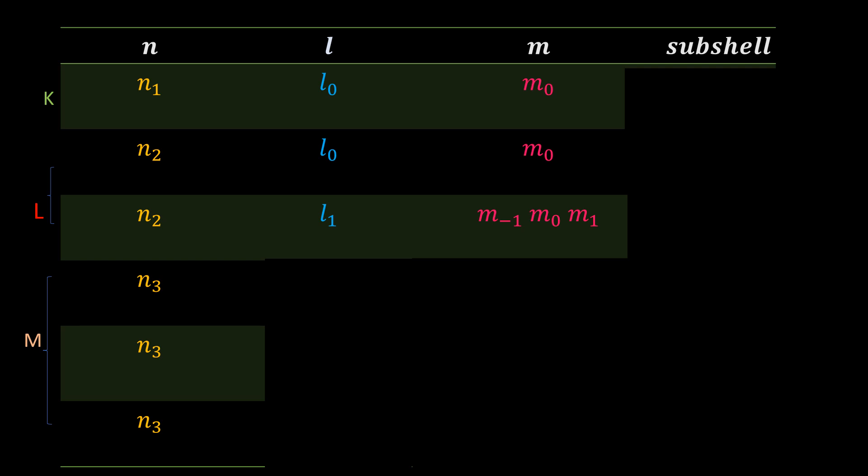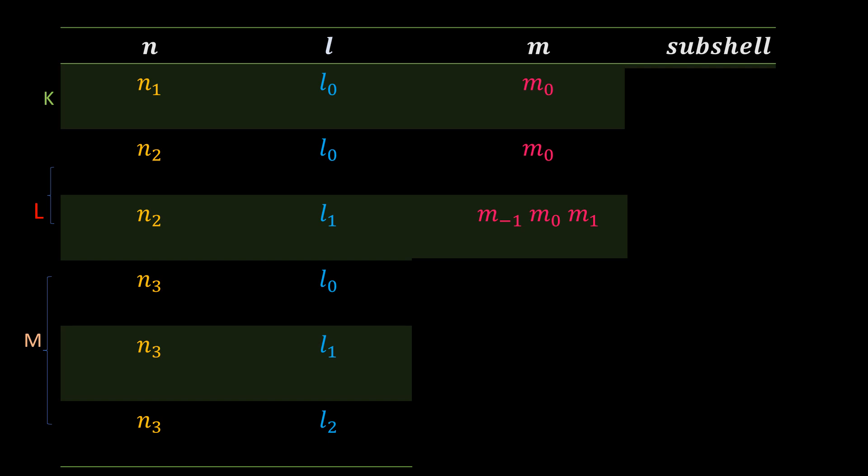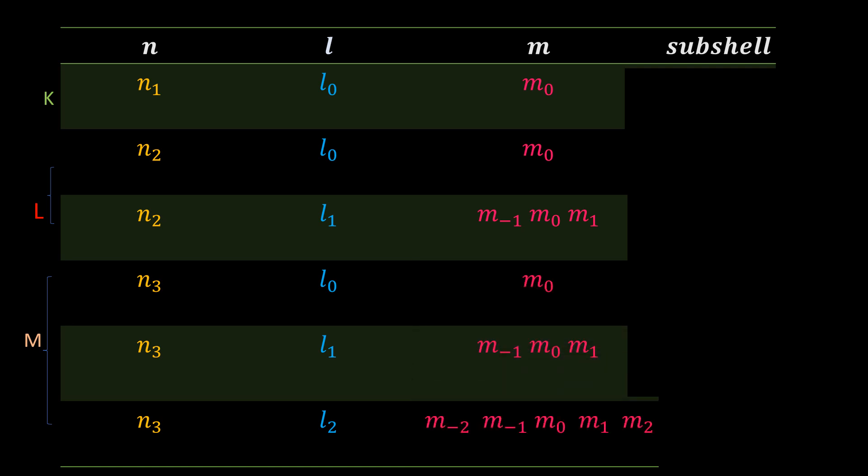For n equal to 3, l can be 0, 1, or 2, as shown below. So there are also three possibilities for m, as shown. The l's tell us which subshell we are in. L equal to 0 is the s subshell. L equal to 1 is the p subshell. L equal to 2 is the d subshell. L equal to 3 is the f subshell. And we can continue from this point in an alphabetical order.